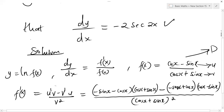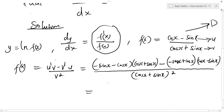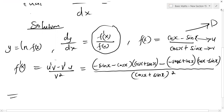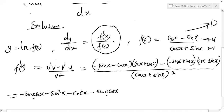This whole value is f prime of x, and remember the derivative is given by f prime of x over f of x. Let's simplify. Opening the first bracket using minus sine x: we get minus sine x cos x, then minus sine squared x. Using minus cos x: minus cos squared x, then minus sine x cos x — writing it as minus sine x cos x since multiplication is commutative.